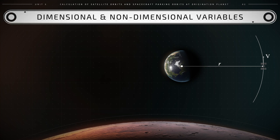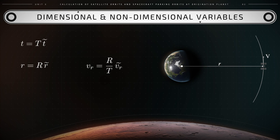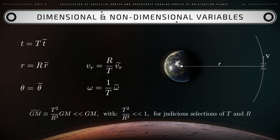The needed non-dimensional quantities are obtained from the following connections between dimensional and non-dimensional quantities. The dimensional time t equals the reference time T times the non-dimensional time t̃. r dimensional equals reference R times r̃ non-dimensional. vr equals R over T times ṽr. Theta is the same as θ̃. Omega equals 1 over T times ω̃, and GM̃ equals T squared over R cubed times GM dimensional. The tilde denotes non-dimensional variables.